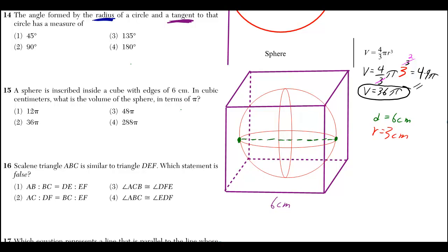A sphere is inscribed inside a cube with edges of 6 centimeters. In cubic centimeters, what is the volume of the sphere in terms of pi?